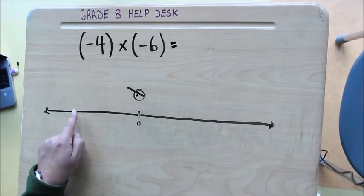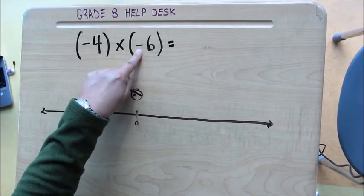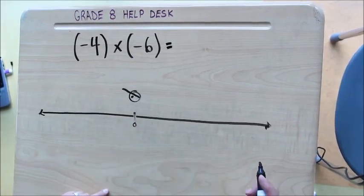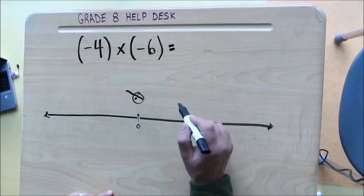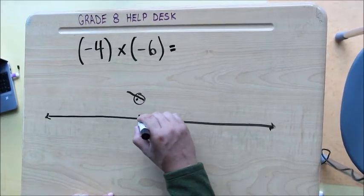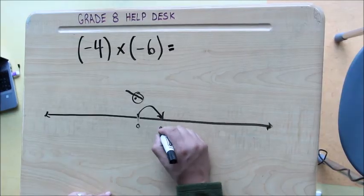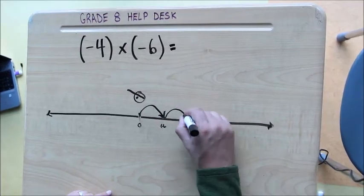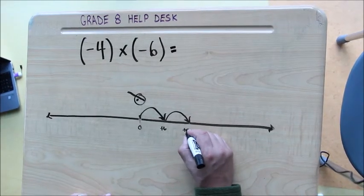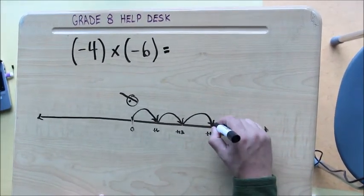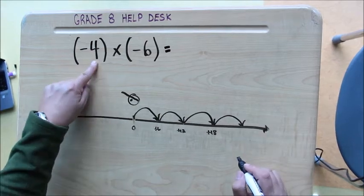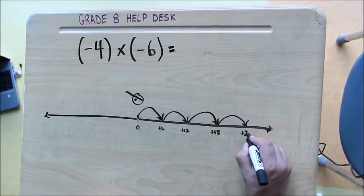This right here tells me whether they're going to be jumping forwards or backwards. And here I can see it's a negative, so they're going to be jumping backwards. So they're going to jump four jumps backwards, each one of six. So there's my first jump, that's going to be a positive 6. My second jump is going to be a positive 12. My third jump is going to be positive 18. And my last jump, the fourth jump, is positive 24.